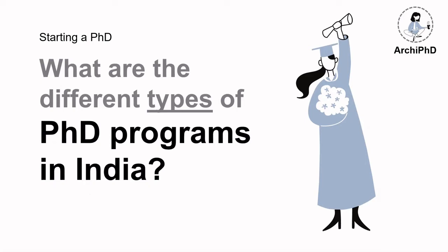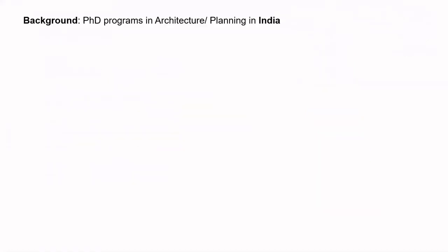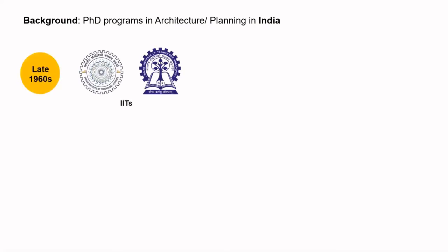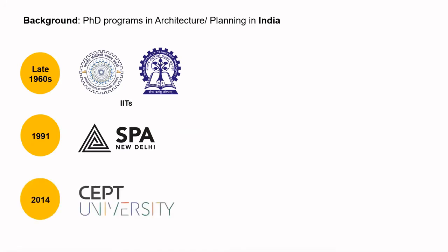Before I begin, let's have a quick background. PhD programs in India have diversified a lot since the last few years, especially when we look at them in the areas of architecture or planning. IITs already had their PhD program since the 1960s, while SPA Delhi started it in 1991. In comparison, private and reputed architectural institutes like CEPT started their PhD program in 2014. This chart clearly indicates that research is gaining boost not only from the government but from the architecture and planning fraternity as well.